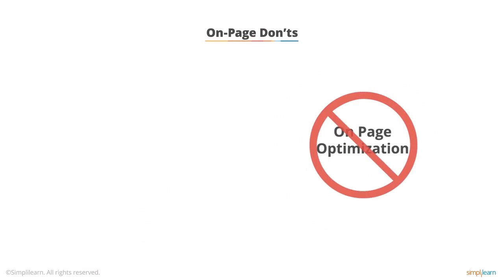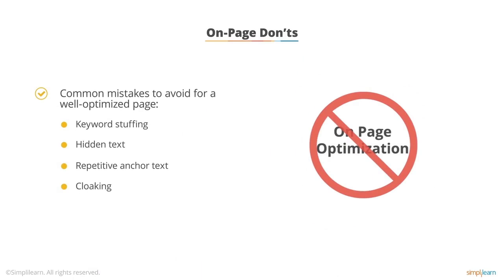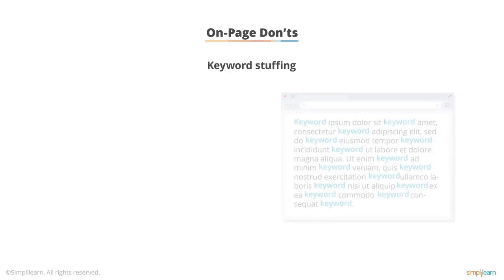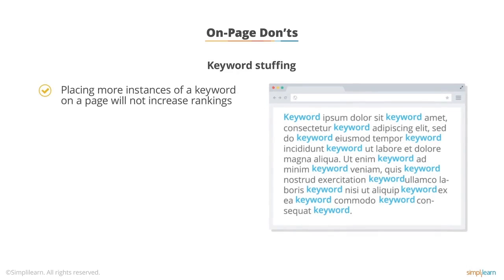Now let's go the different direction and cover the things you should not be doing. These are the most common mistakes I see. The first one is keyword stuffing. Back in the day, it used to be helpful to put lots of instances of the keyword you were trying to rank for on the page — but that's no longer true. Search engines, and humans for that matter, are a lot smarter about this now. Keyword stuffing does not work. You're not going to rank better for any given phrase by including it 100 times on the page. Don't do it.